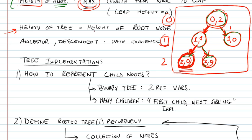So, this is height and depth of a node. When we talk about the height of a tree, we're actually referring to the height of the root node. So, in this case, it would be two.